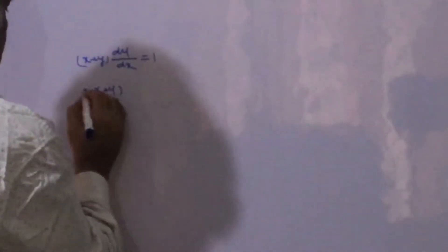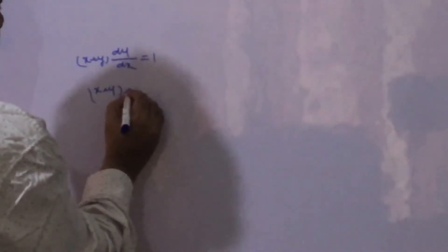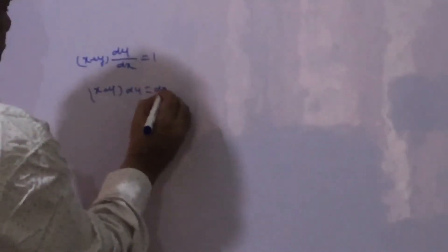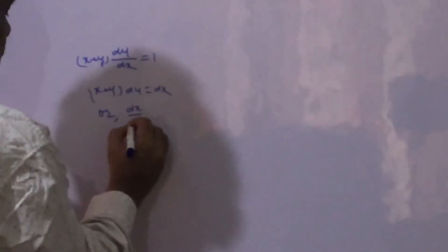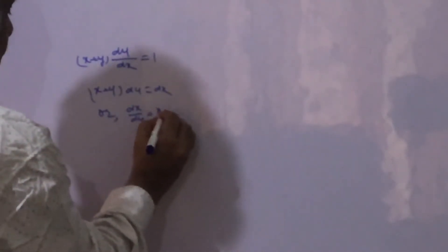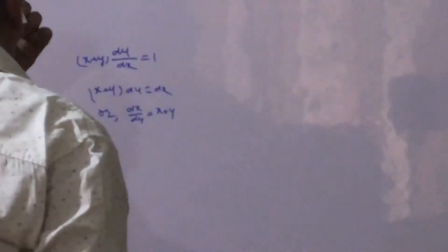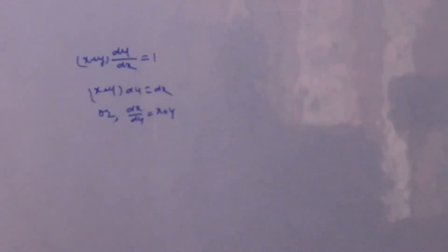We can write this as dx + y·dy = dx, or dx/dy = x + y. We generally solve y in terms of x, but here we will try to solve x in terms of y. We can write it like this.